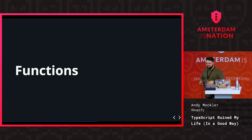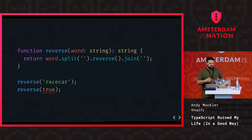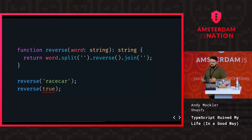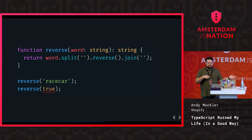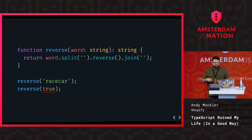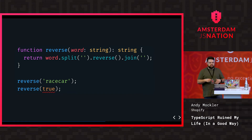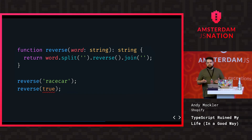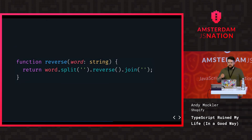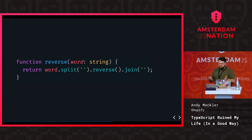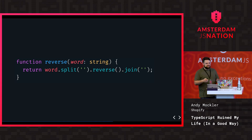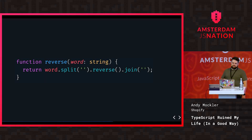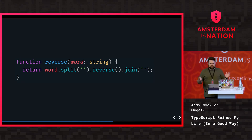Functions are where it gets really interesting. Usually we're writing modules with imports and exports, so it's harder to remember what a function takes in and what it gives back. Here we have a reverse function where word is typed as a string and there's a return type annotation. TypeScript can infer everything else — it knows join returns a string. If I try to reverse a boolean it will be upset. You can also omit the return type since the compiler can infer it from the code.